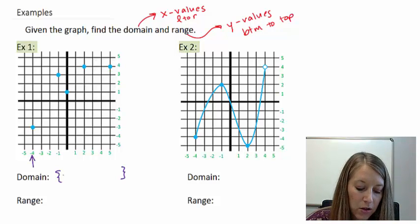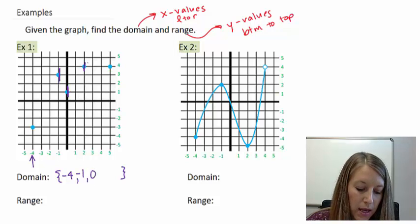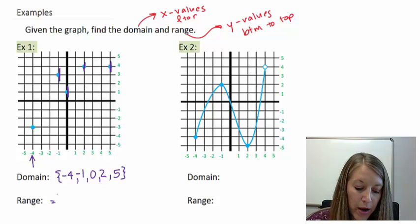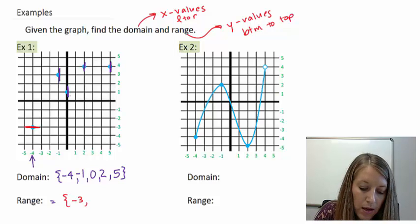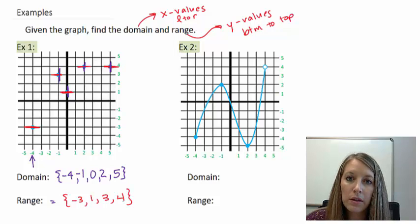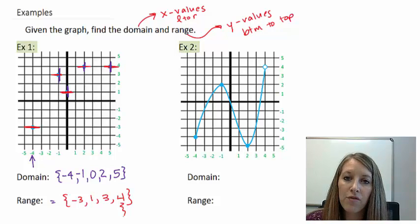My smallest X value is negative 4, my next smallest is negative 1, then 0, then 2, then 5. We basically just list each X value where we have an ordered pair or a point. We're going to do the exact same thing for the range, but note that the range goes by Y values. Our smallest Y value is negative 3, the next smallest is 1, then 3. We actually have two points that both fall on the Y value of 4, but we only list that Y value once because we don't list any repeats. This still is identified as a function — we can have repeated range values, but we cannot have repeated domain values. Therefore, we have found the domain and range of example 1.